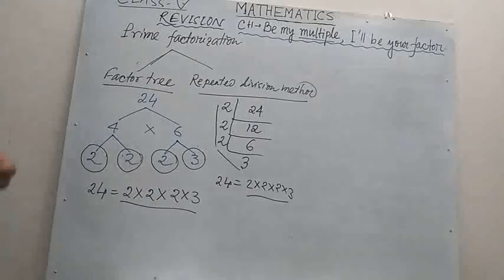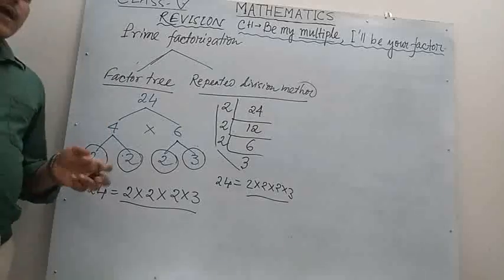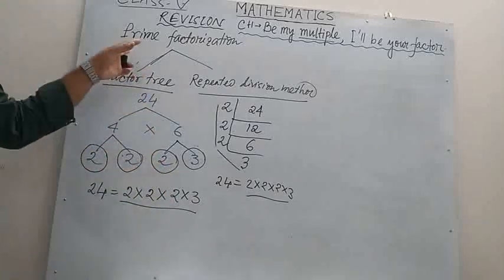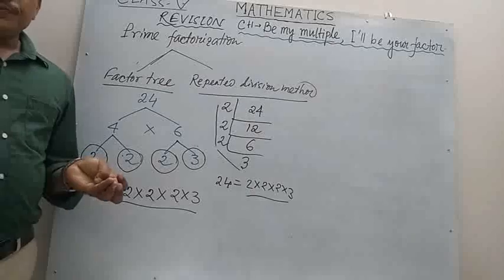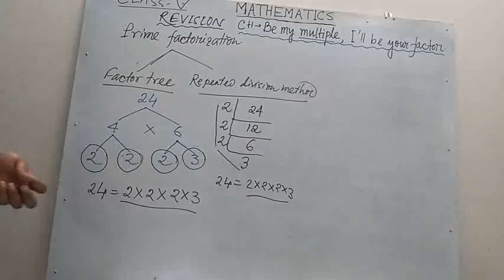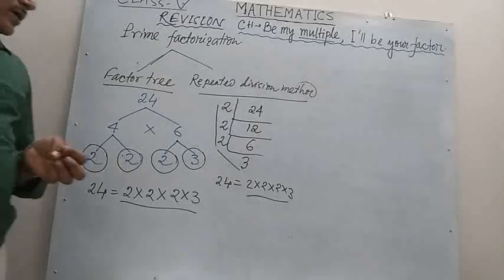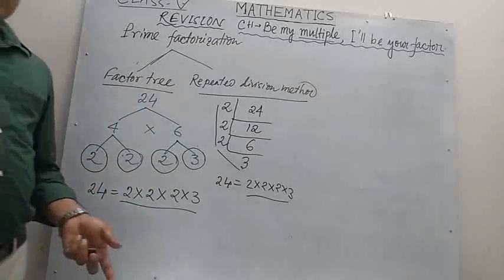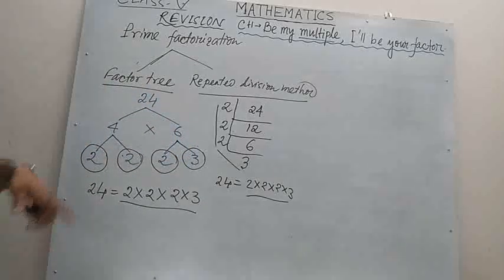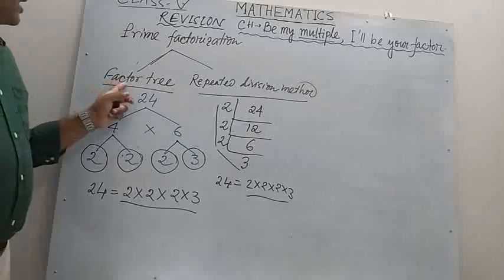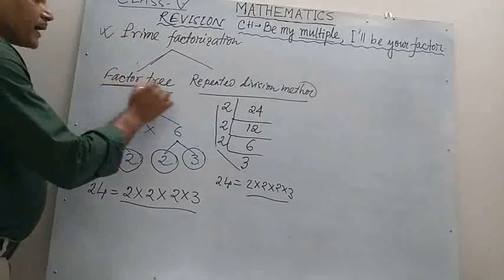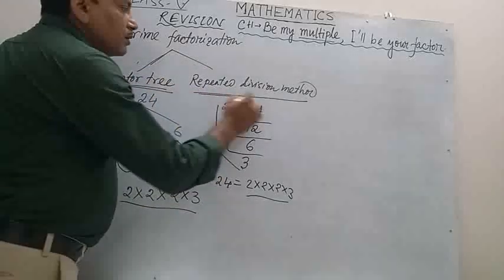So let me revise what we have done in this chapter: multiple, factor, common factor, prime factor, prime number, composite number, twin prime number, co-prime number, and finally prime factorization — using the factor tree method and the repeated division method. Prime factorization is very important.